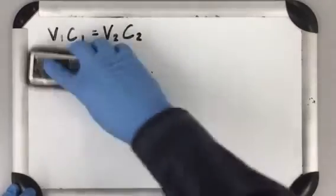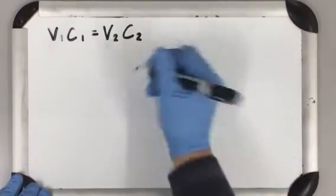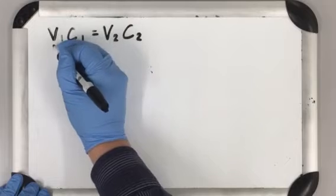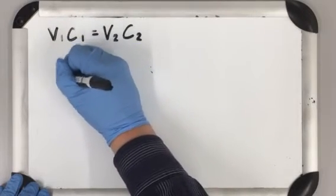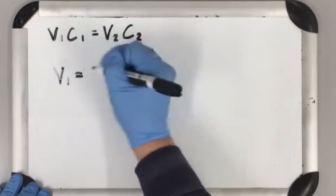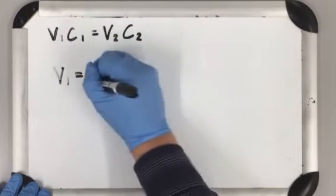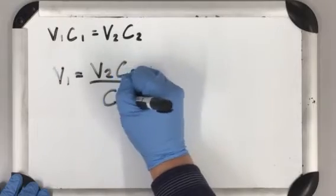If we arrange this equation, V1 equals V2 times C2 over C1.